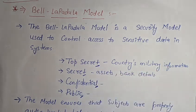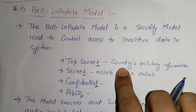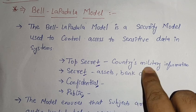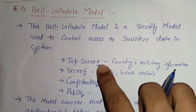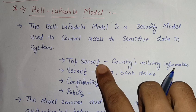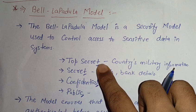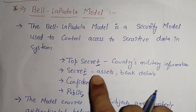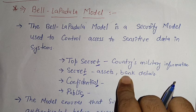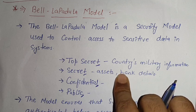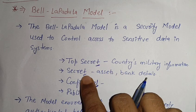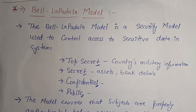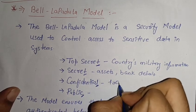The first type is top secret data. For example, for any country's military, if an organization is working for the military, then that military information will be top secret because it cannot be revealed to the public. The second type is secret data — this includes assets, bank details, and the total growth and revenue of any organization or company.